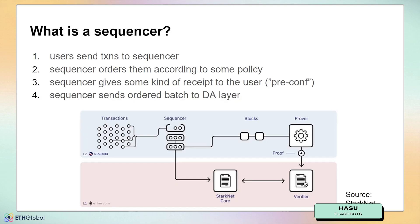So decentralizing rollup sequencers — what is a sequencer? There are basically four steps involved. As a user, you send your transactions to a layer 2 sequencer, who orders them according to some policy and then gives the user some receipt. Vitalik was talking about pre-confirmations — that is step number three here.